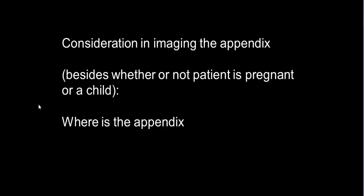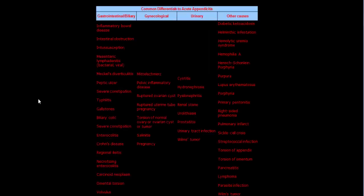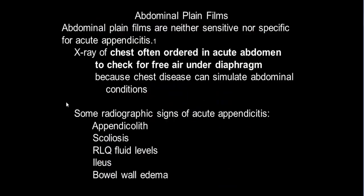Key imaging considerations include whether the patient is pregnant or a child, and where the appendix is located. The imaging modalities to explore include plain film, ultrasound, MRI, and CT. Common differentials for acute appendicitis include GIT, gynecological, biliary, and renal causes. Abdominal plain films are neither sensitive nor specific for acute appendicitis.